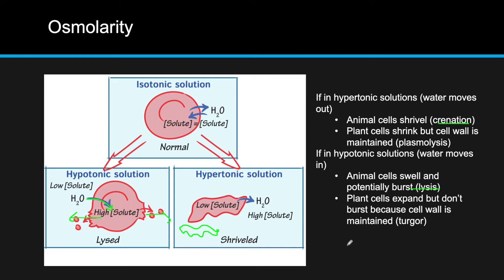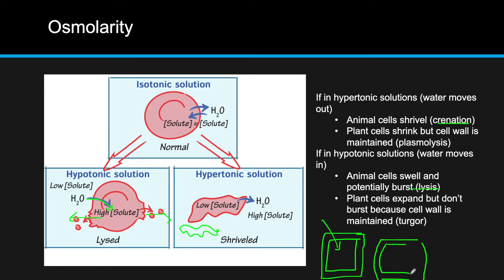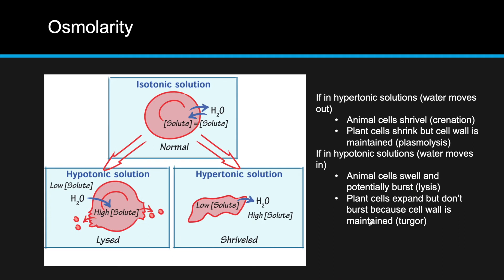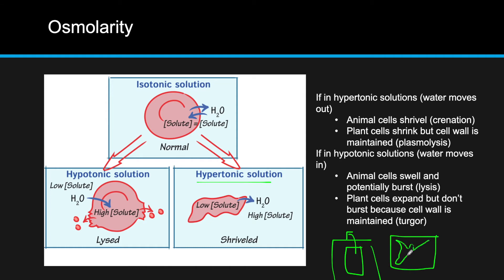For plant cells, it's a little different because of the cell wall. When a plant cell is placed in a hypotonic solution, water still enters, creating plasmolysis — but the cell doesn't burst. Instead, it puts tension and pressure against the cell wall, expanding slightly. When a plant cell is placed in a hypertonic solution, water still leaves, but because of the cell wall the cell maintains its shape; instead, the cell membrane shrinks inward in a process of crenation. This is known as turgor.